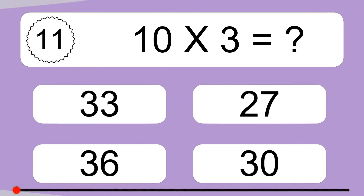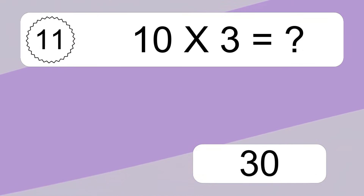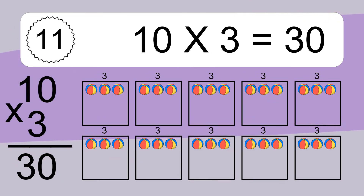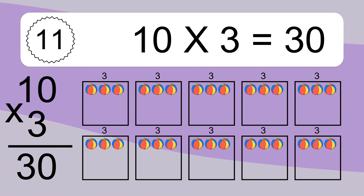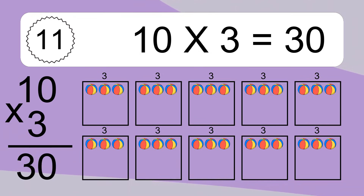10 times 3 equals what? 10 times 3 equals 30. We have 10 boxes, and each box has 3 colorful balls inside. If you count all the balls in all the boxes together, you will have 10 times 3 balls. This equals 30 balls.